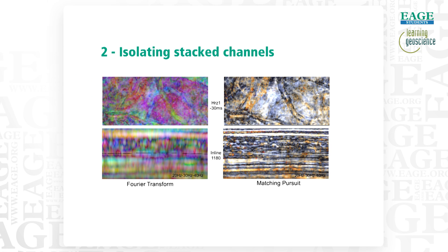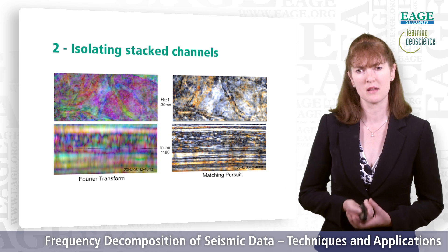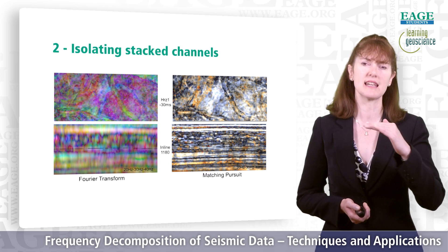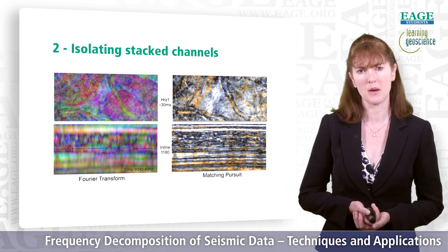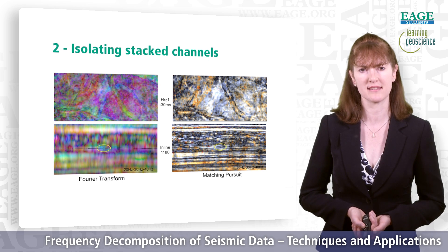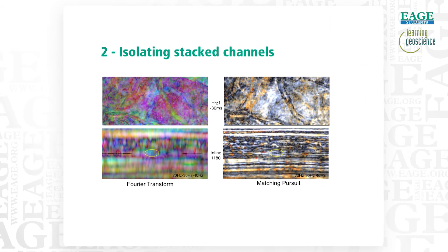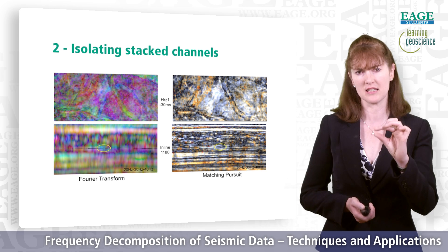This can be seen in the vertical section through the two blends. The horizon on the vertical section is at that shifted point — 30 milliseconds above its true position. We can see the vertical smearing on the left-hand side from the Fourier transform, whereas in the matching pursuit result we have distinct layers and much better vertical localization, with the channel system very tightly constrained inside the circle.